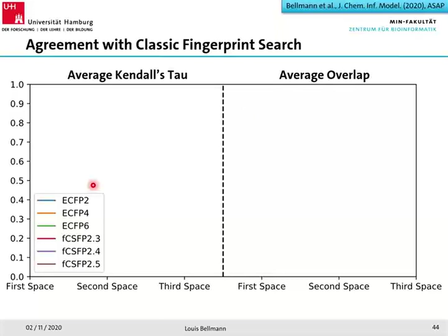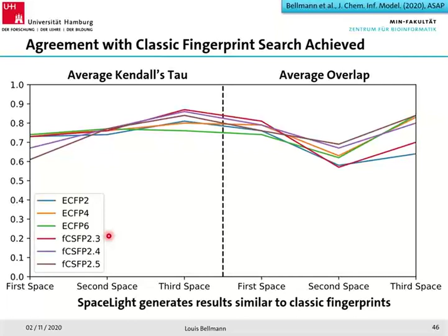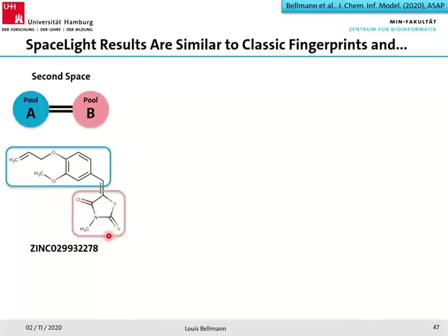We did this analysis for six different fingerprint types — ECFP2, ECFP4, ECFP5, ECFP6, and FCSFP variants. The results are between 0.6 and 0.9 for both metrics on all spaces, which is really high — they are very similar. Also, performance does not strongly depend on which fingerprint method is chosen, indicating you can use the fingerprint method you prefer within SpaceLight. The take-home message is that SpaceLight searches ultra-large chemical spaces and the results are similar to a classic fingerprint search, but in much larger spaces.